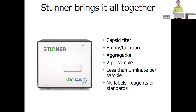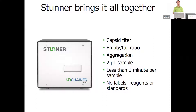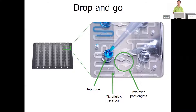That leads to the question: what if we just combine them? That's where Stunner brings it all together. It offers you capsid titer, empty-full ratio, and aggregation results on only two microliters per sample in less than a minute per sample — all with no labels, reagents, or standards. Starting from the Stunner plate, a 96-well format plate, you add two microliters of sample into the input well, and that sample is pulled into the microfluidic reservoir.